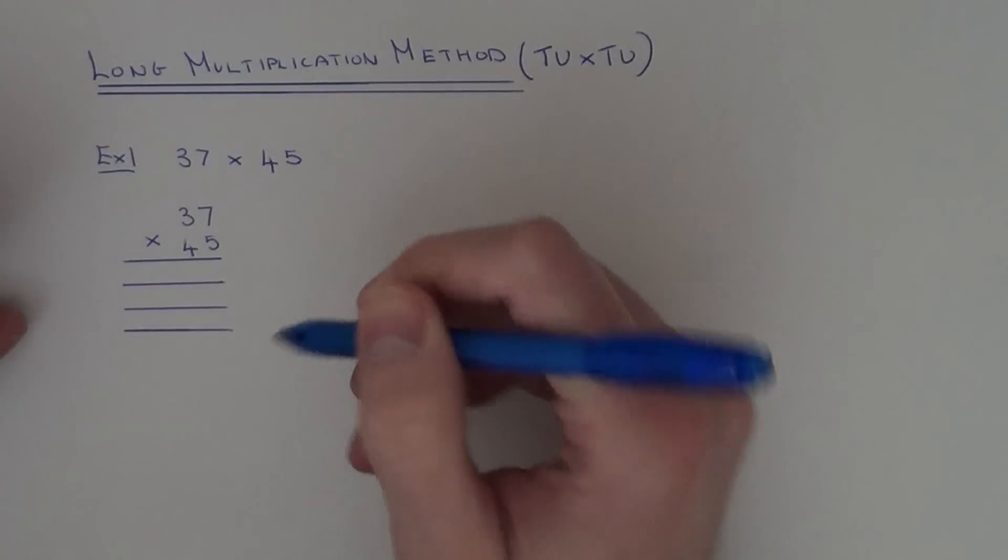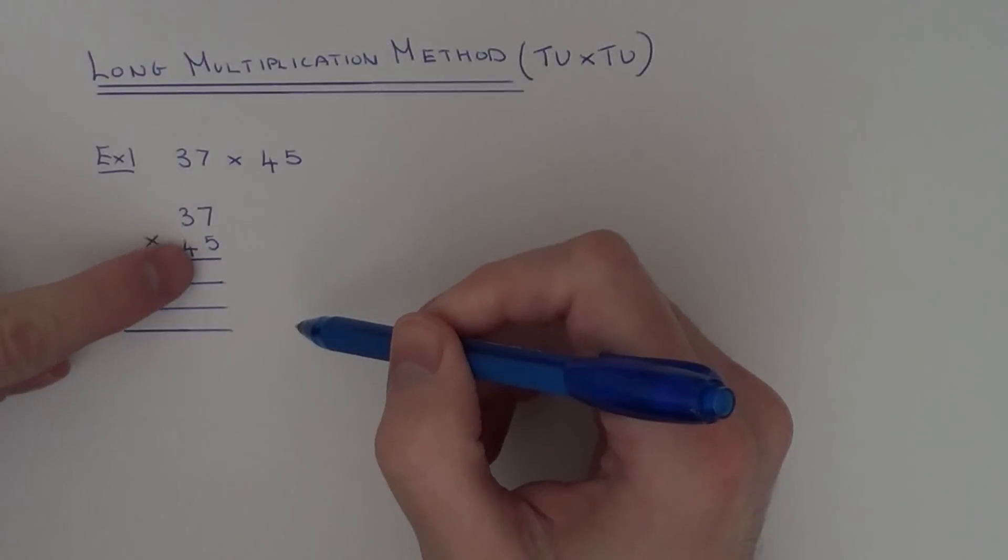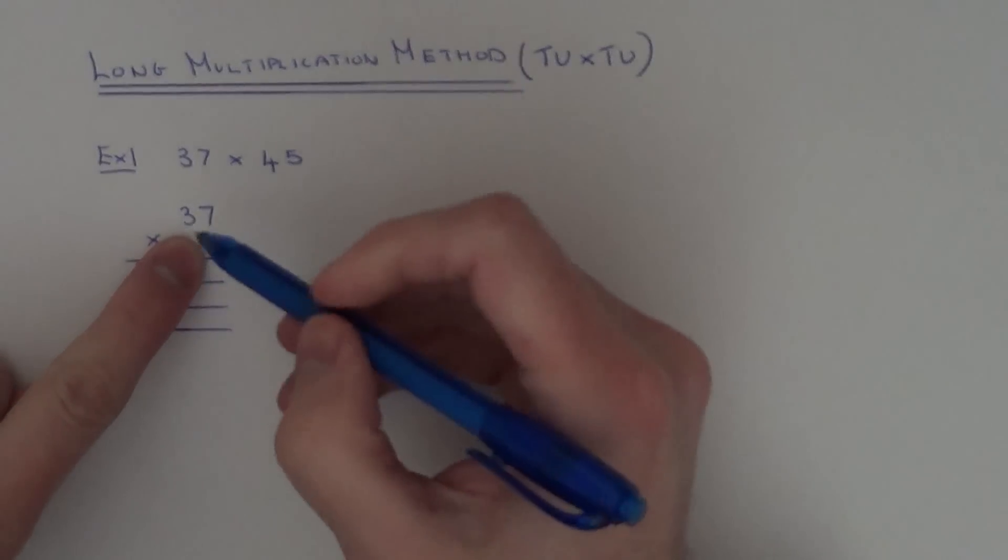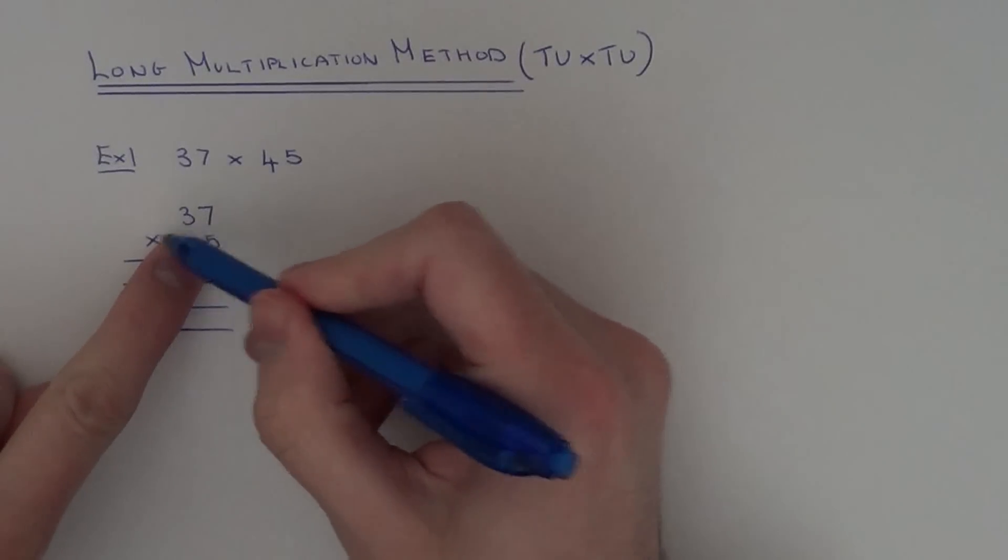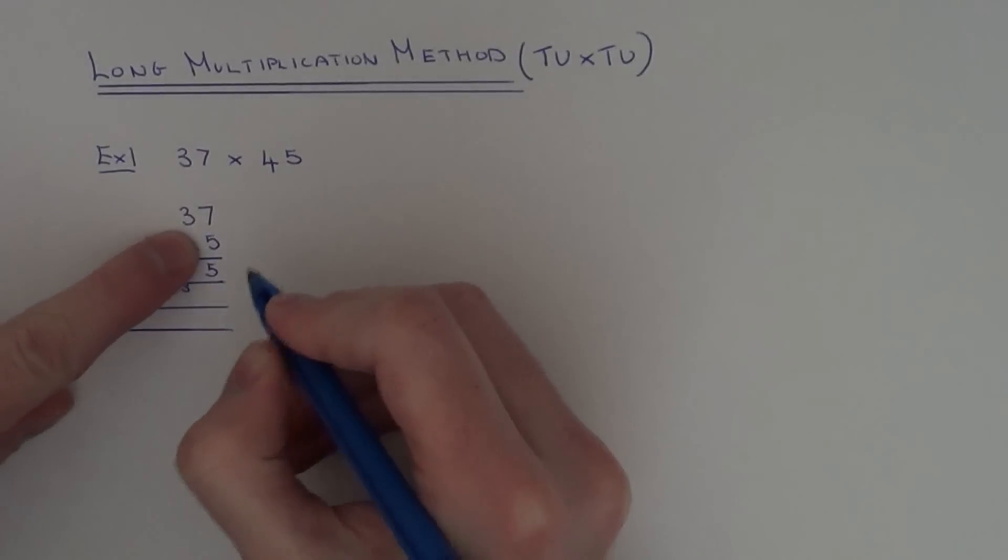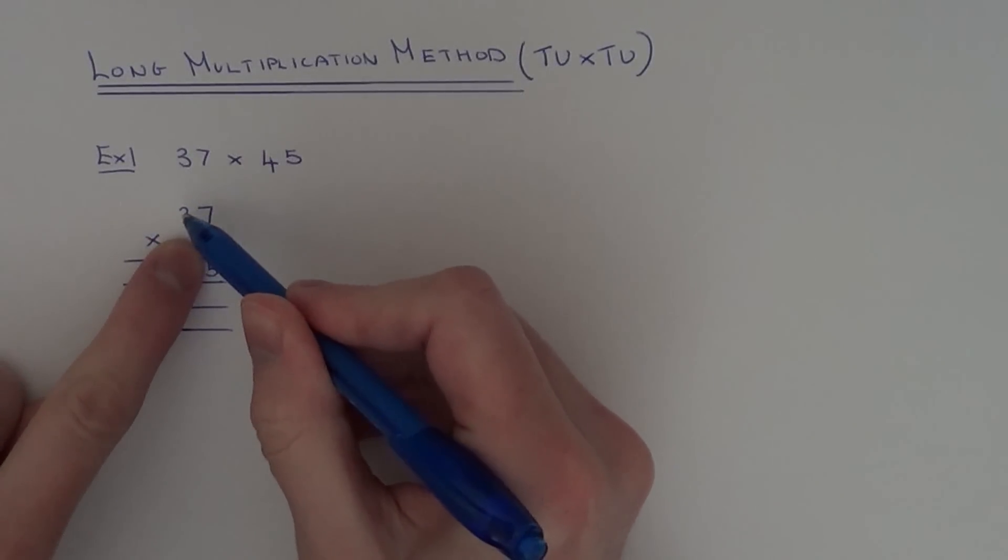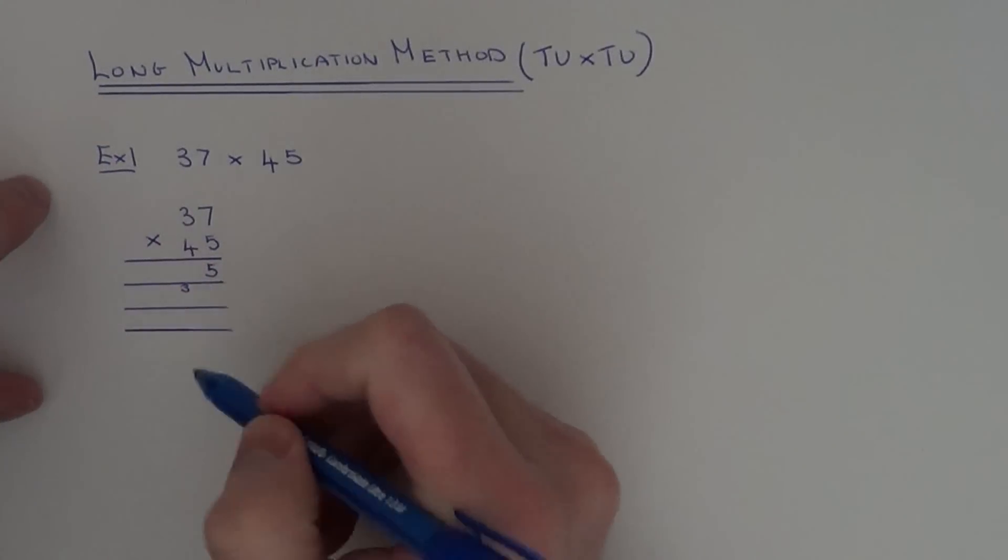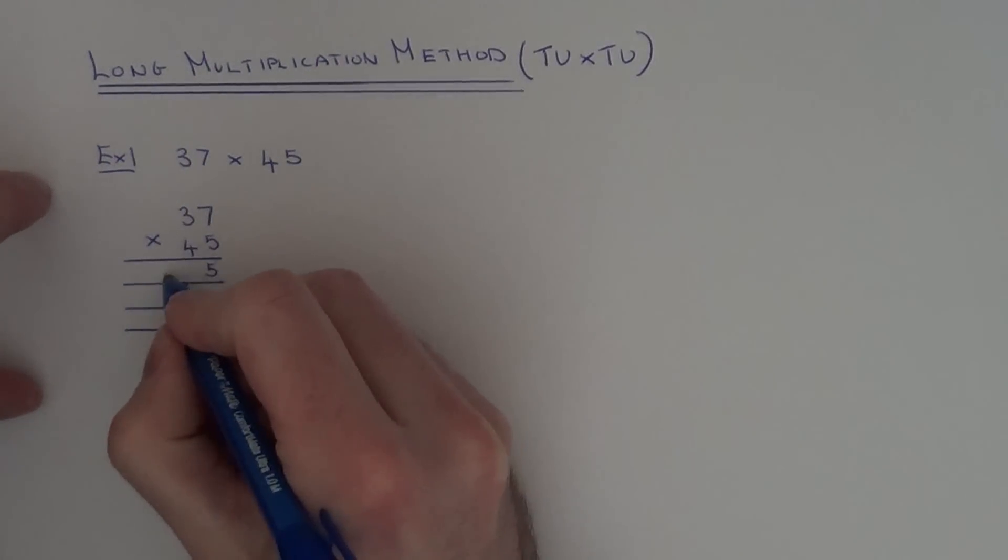So on the first line what we need to work out is 37 times 5. So first of all, do 7 times 5, that's 35. So put the 5 there, write the 3 underneath. And then we've got to do 3 times 5. 3 times 5 is 15. Add on the 3 underneath, which gives us 18.